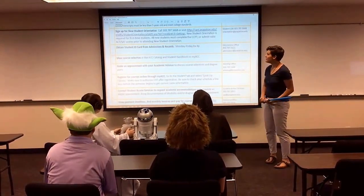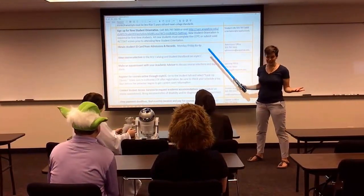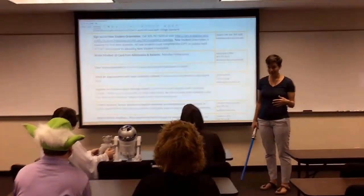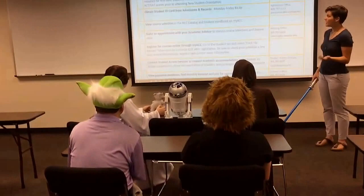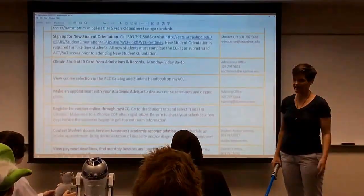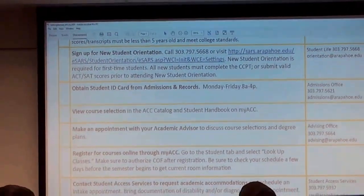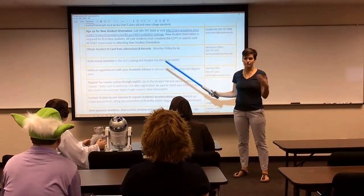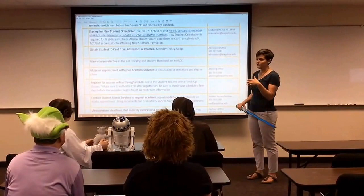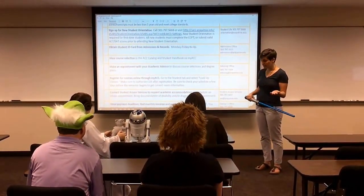Your next step is to sign up for new student orientation through our Student Life office. You can sign up on the Student Life webpage, come in, or call 797-5668. That's where they'll go over how to get your student ID card, which is a quick process through admissions and records, and you'll start going through the registration process.